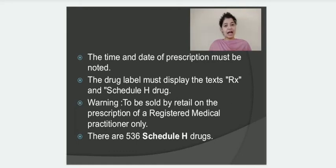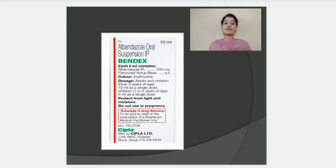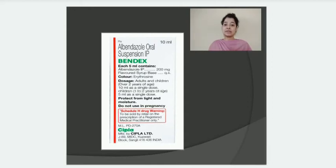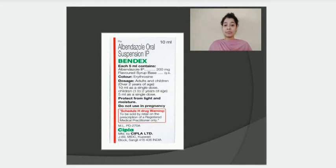Initially there were 510 drugs in the Schedule H category, but presently, after revision by the Drug Technical Advisory Board, there are 536 Schedule H drugs in India. On the label, RX is written on the top left-hand side, and there is a red color box stating that the drug belongs to category H, with a warning that it is to be sold only when a person produces a prescription from a registered medical practitioner. A red color line on the label means this drug is not an over-the-counter drug and can only be sold with a prescription.